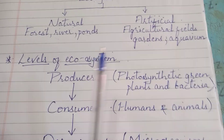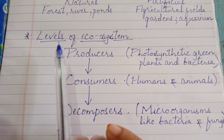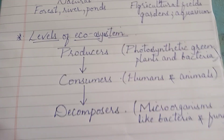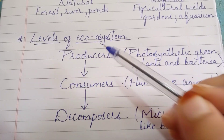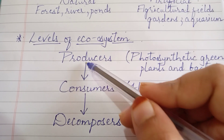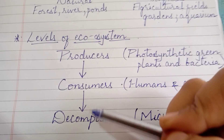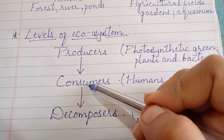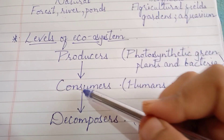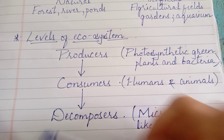In today's class, we will be discussing a very important aspect of the ecosystem: the levels of the ecosystem. As you can see, I have written three words — producers, consumers, and decomposers — with a downward arrow mark. The levels of the ecosystem must always be written in this form: first comes producers, second comes consumers, and finally decomposers. The arrow must always be downward, from producers to consumers and finally to decomposers.